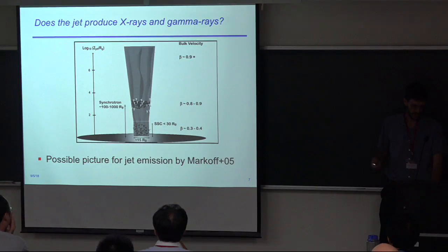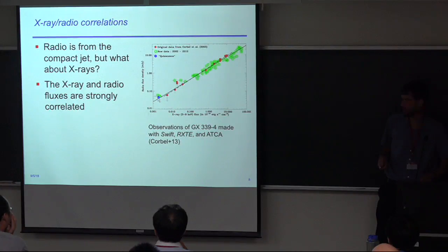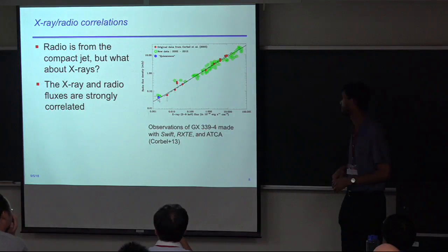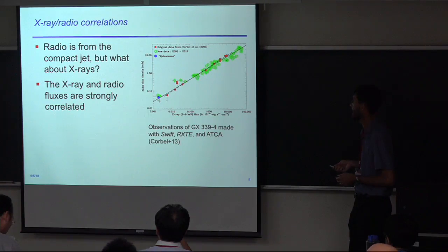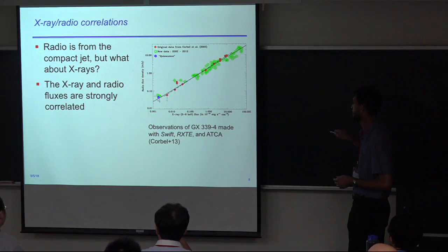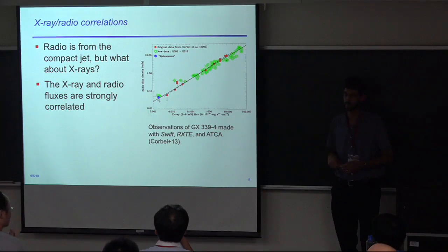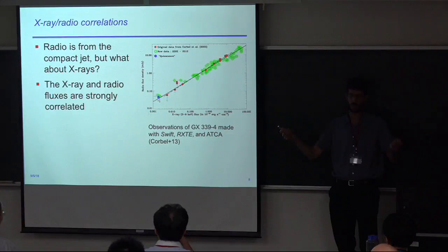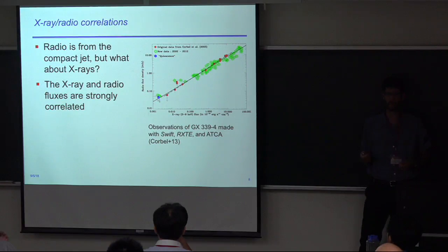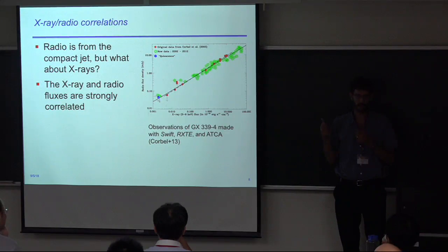One reason we think this might be happening is because very tight correlations have been measured between X-ray and radio. This shows one example for GX 339-4, a very well-studied X-ray binary. We know the radio flux is from the compact jet, and this type of correlation suggests the X-ray may also be related. You could imagine a case where they're both connected to the mass accretion rate or other parameters, so it's not completely clear that the X-rays are from the jet — but this is the kind of evidence that makes us think they might be.